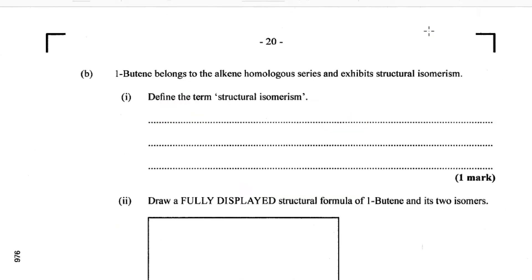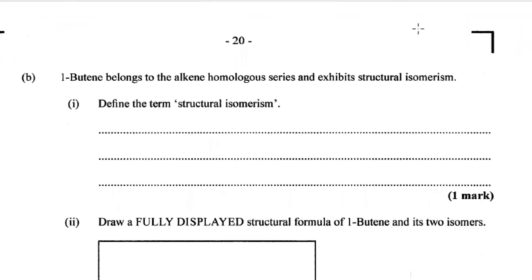Part B. One-butene belongs to the alkene homologous series and exhibits structural isomerism. Part one of B: define the term structural isomerism. This is the existence of organic compounds having the same molecular formula but different structural formula, or different arrangement of the atoms in space.